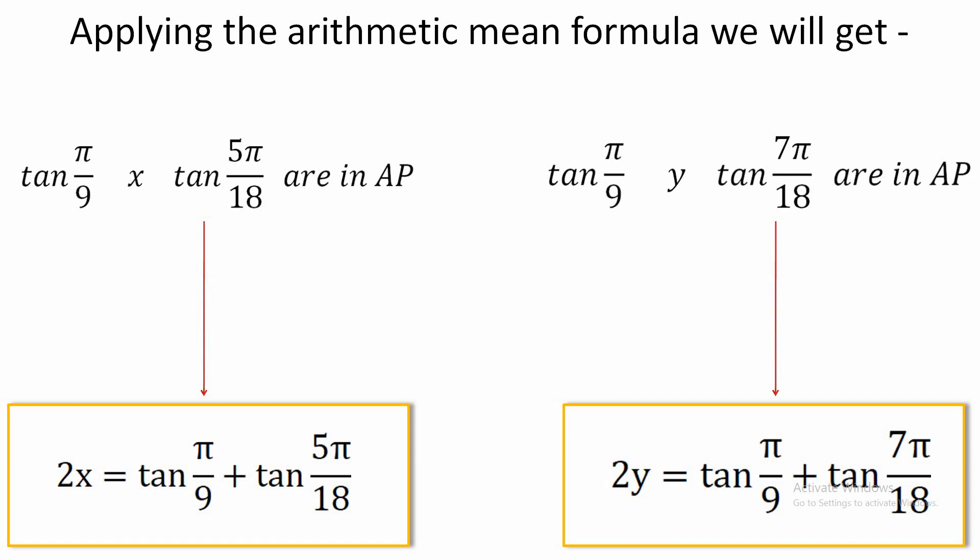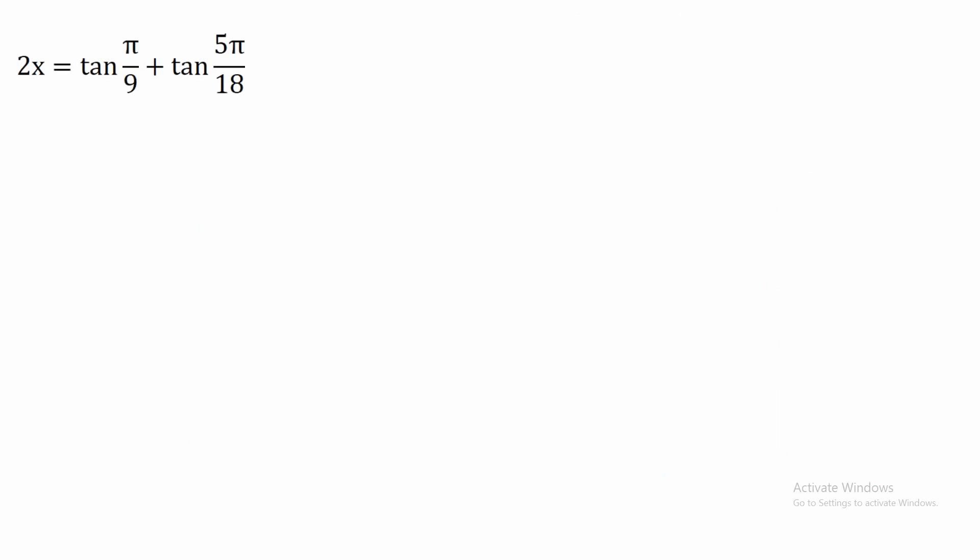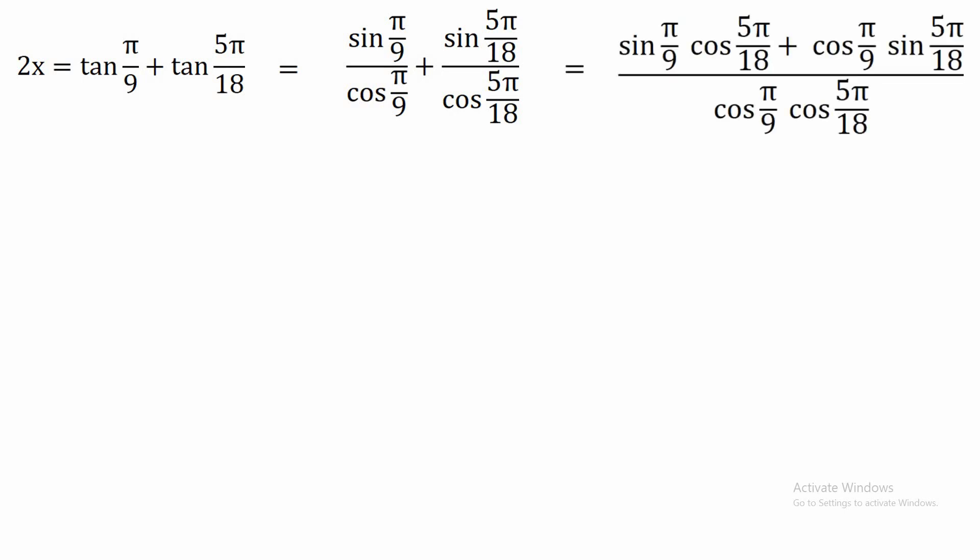We will try to solve these two results individually in two different cases. In the first case, we solve 2x = tan(π/9) + tan(5π/18). We convert both tan terms into sin/cos format, giving sin(π/9)/cos(π/9) + sin(5π/18)/cos(5π/18). Taking the LCM by cross multiplication, we get [sin(π/9)·cos(5π/18) + cos(π/9)·sin(5π/18)] divided by cos(π/9)·cos(5π/18).